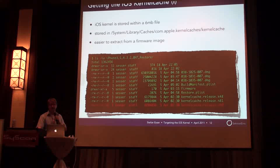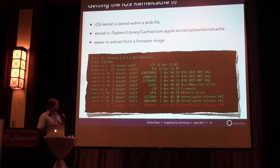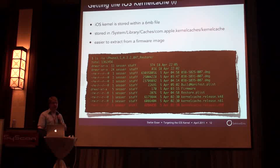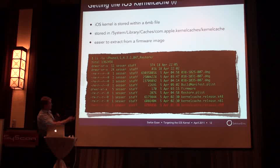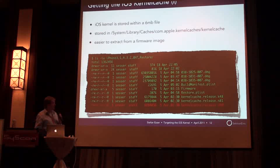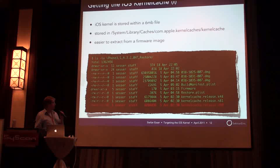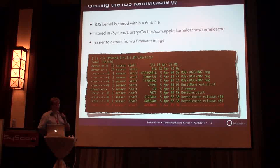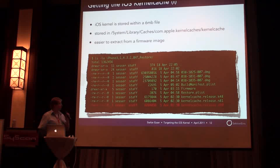On a jailbroken iPhone you can just copy it from there. Or, which is easier, you can just download one of the firmware updates. The firmware updates are just like zip files, and you can unzip them, and when you unzip them you'll see this kind of directory listing, and you can see there are three kernel caches here.